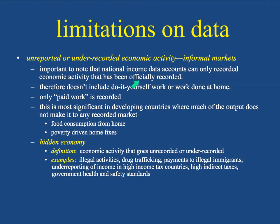National income data accounts only for recorded activity that has been officially presented. It doesn't include do-it-yourself work done at home. For example, I completely renovated a house in Atlanta, Georgia — the value of my house went up as a result of my labor, but it wasn't paid work and wasn't recorded at all. That's another example of how national income data can be limited or inaccurate.